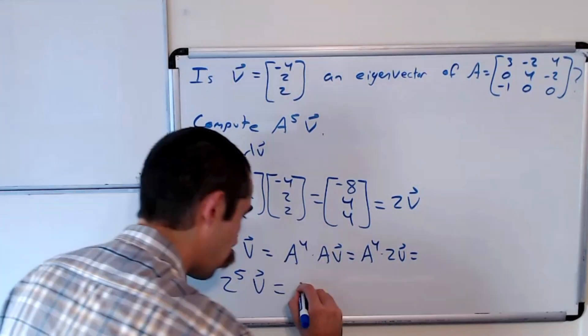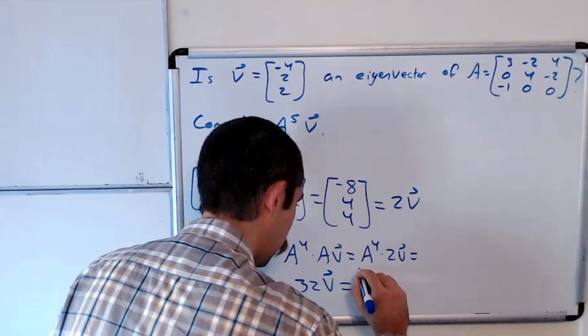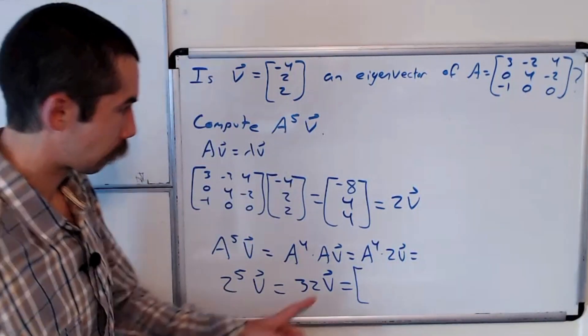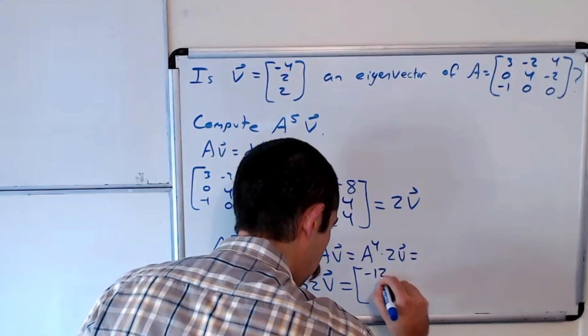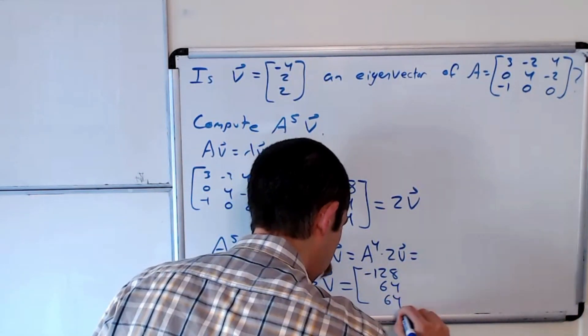So 32 V, which is the vector negative 128, 64, 64.